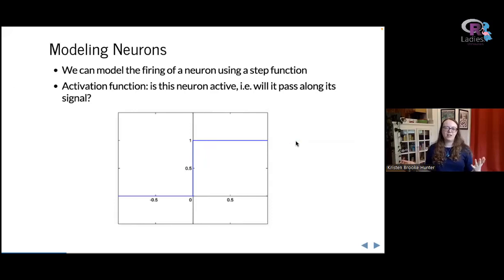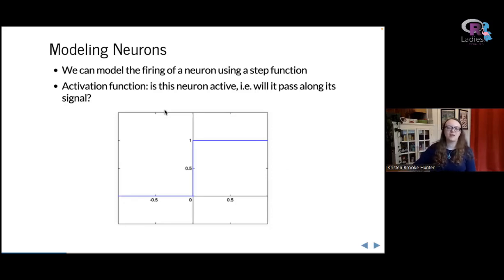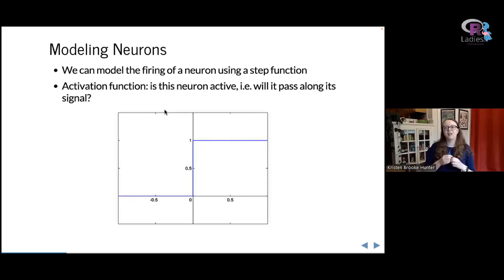We can model this mathematically using a step function. Here the y-axis is whether the neuron is on or off — zero is off and one is on — and the x-axis is our inputs. If the input is negative, the neuron is off; if the input is positive, the neuron is on. This is called an activation function because it tells you whether the neuron is active. If it's active, it passes its signal downstream to the next neuron.